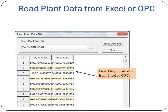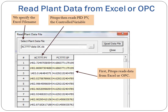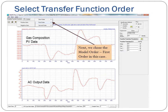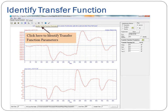First, PyTops reads data from Excel or OPC. We specify the Excel file name. PyTops then reads the PID PV (the controlled variable) and the PID OP (the manipulated variable). Next, we choose the model order — first order in this case. Click here to identify transfer function parameters.